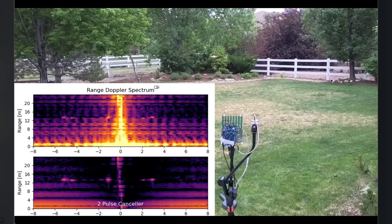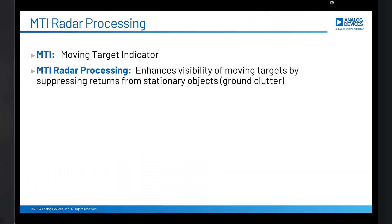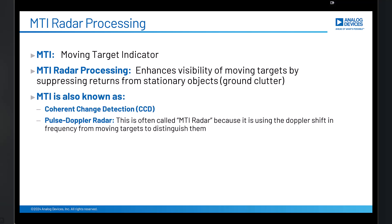So how does that work? MTI stands for moving target indicator, and the goal of MTI radar processing is to enhance the detection of moving targets by eliminating everything that is not moving. MTI processing is also known as pulse doppler radar because it is using the doppler shift in frequency from moving targets in order to distinguish them. Some also call it coherent clutter detection, or two pulse canceller, which I kind of like the most because it explains exactly what we're doing.